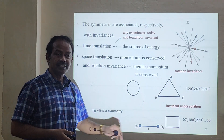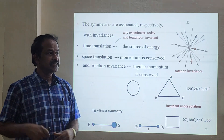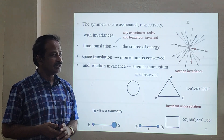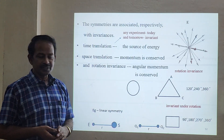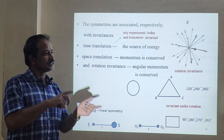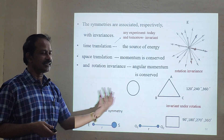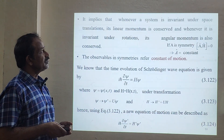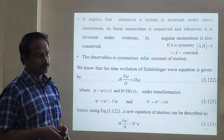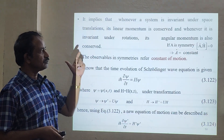This illustrates linear symmetry. Suppose we have two charged particles Q1 and Q2 at some distance r. If we exchange Q1 to Q2 and Q2 to Q1, the answer will be the same — this is called linear symmetry. Similarly for the sun and earth: if you exchange earth to sun and sun to earth, we again have linear symmetry. This implies that whenever a system is invariant under space translation, linear momentum is conserved; and whenever it is invariant under rotation, angular momentum is conserved.